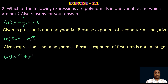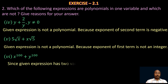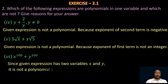Take the sixth one: x¹⁰⁰ + y¹⁰⁰. Clearly there are two variables in the given polynomial, so it is not a polynomial in one variable.